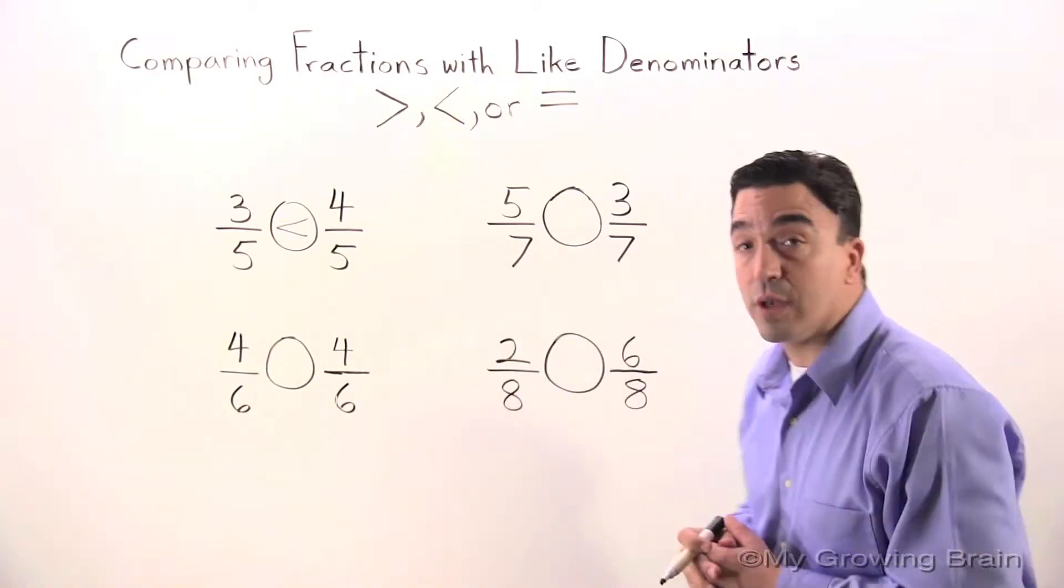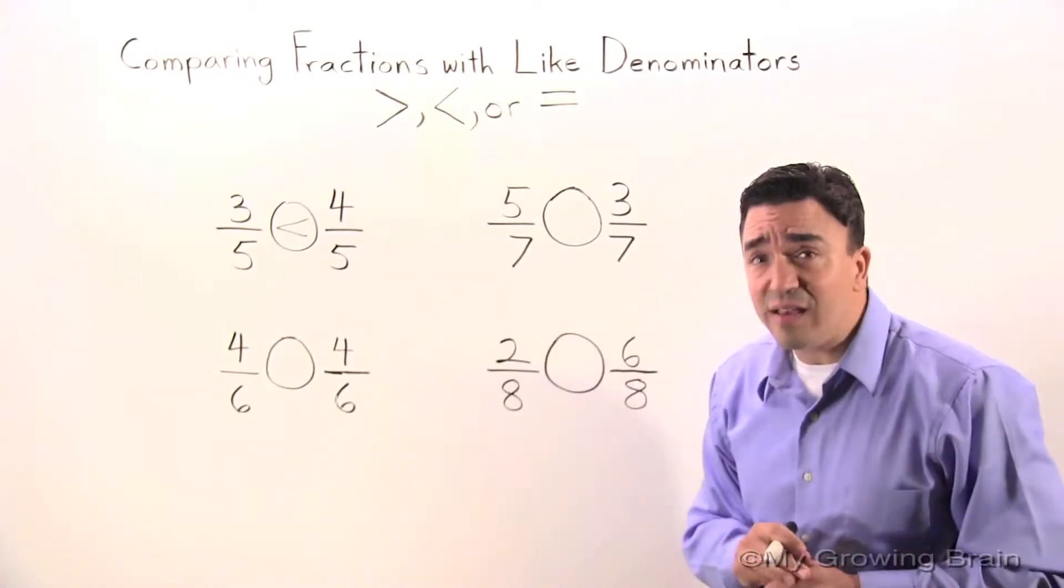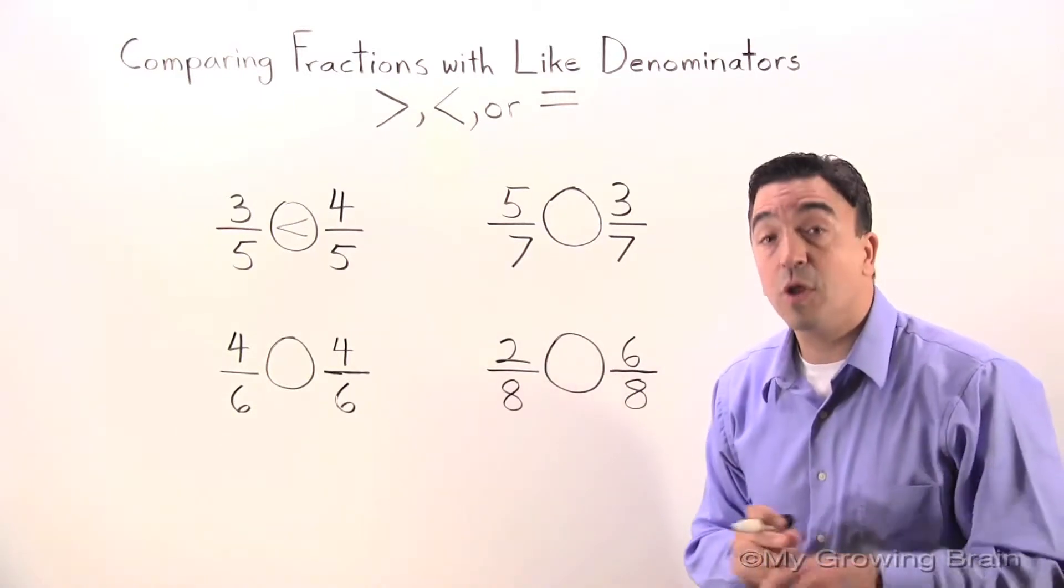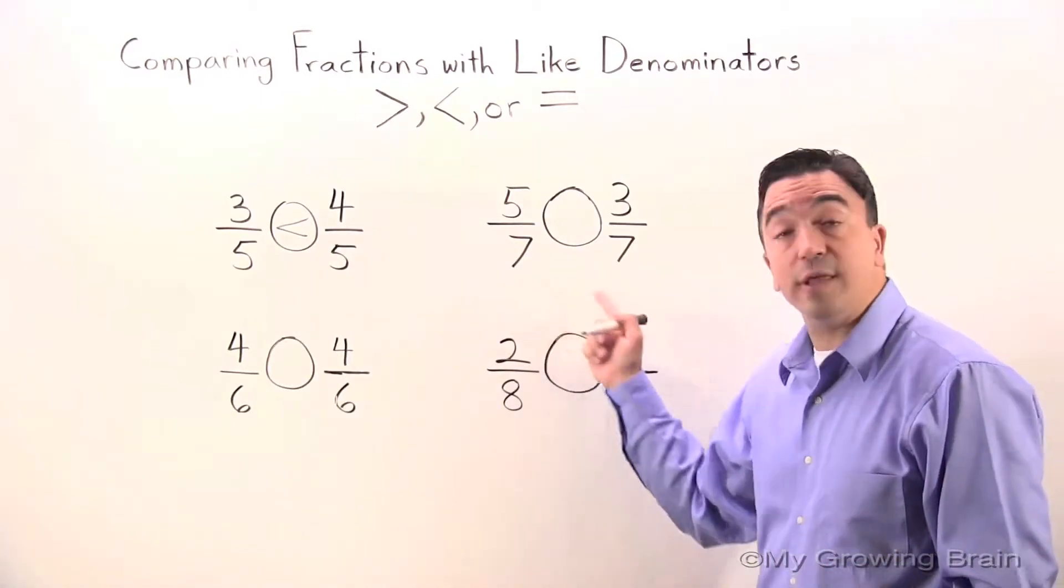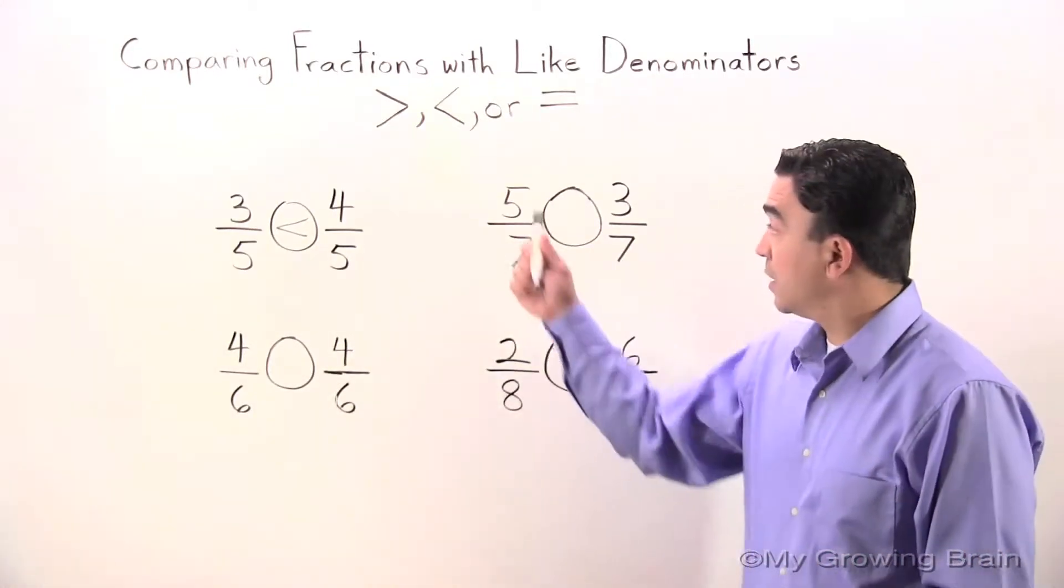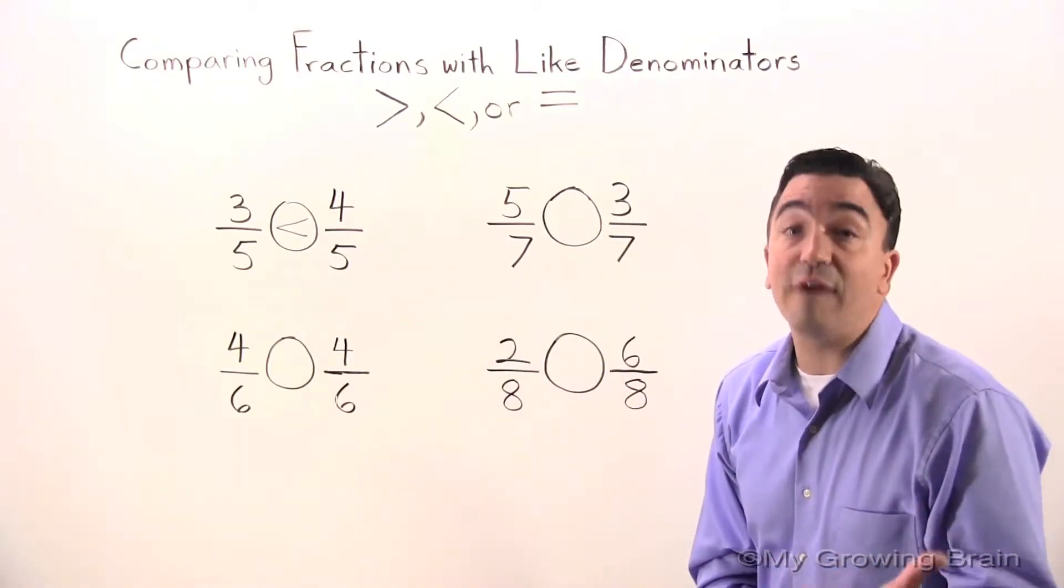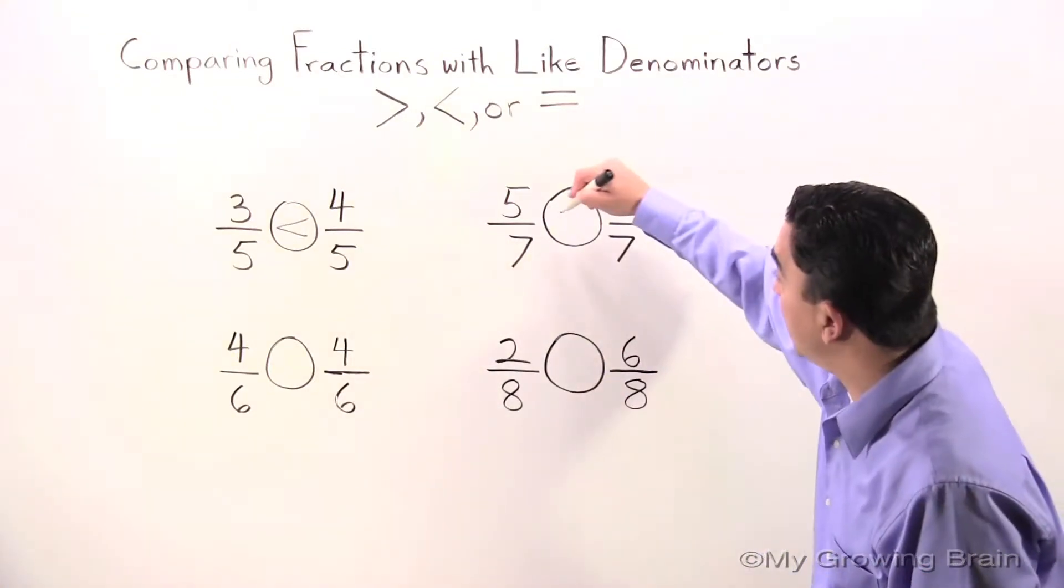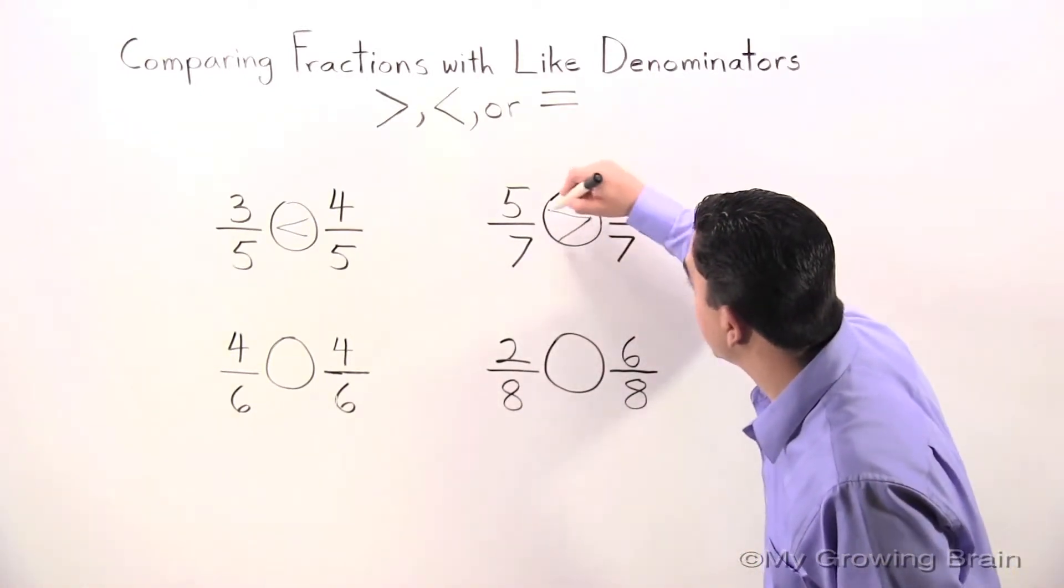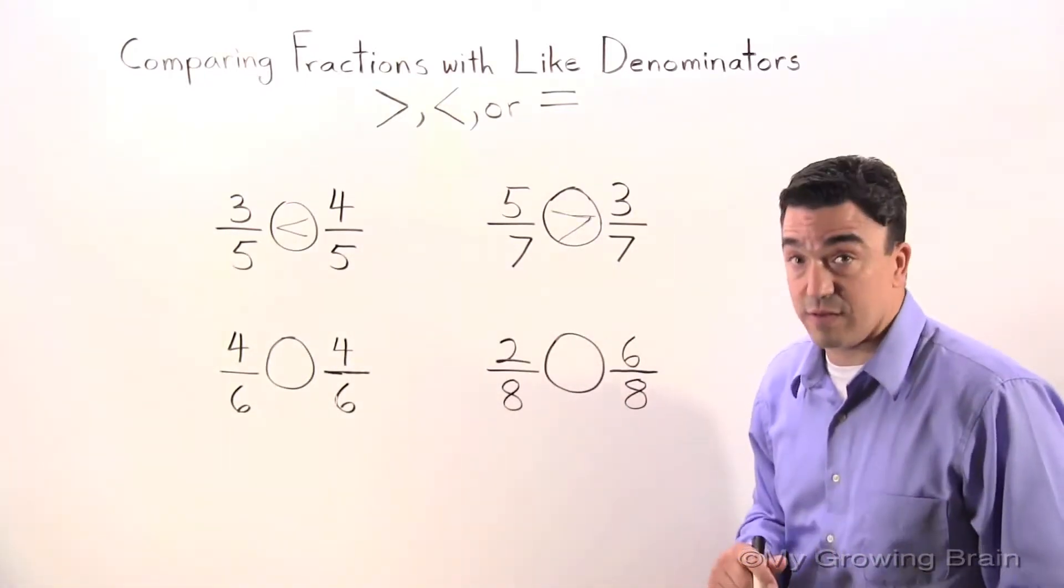Let's go to the next one. We have five-sevenths - is it less than, greater than, or equal to three-sevenths? We know once again we're dealing with like denominators, so we look at the numerator. We're looking at numerator five and numerator three. We all know that five is greater. Five-sevenths is greater than three-sevenths.